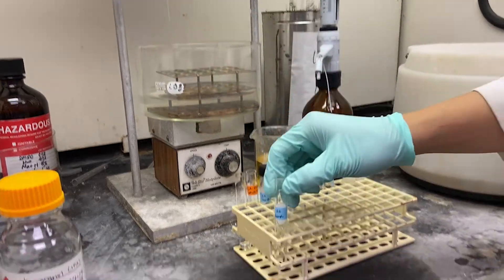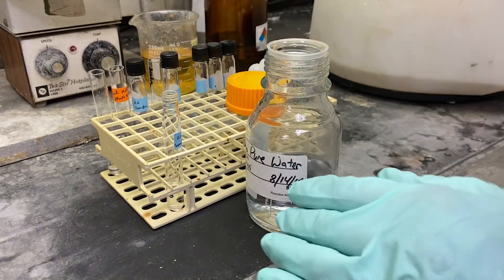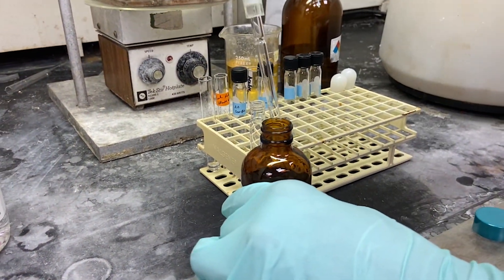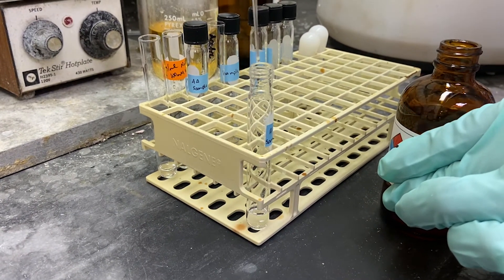After the sample is dried, 2 milliliters of water is added to the sample and the sample is vortexed. Then, 2 milliliters of DCM is added to the sample and the sample is vortexed thoroughly and centrifuged. Then, the top water layer is removed, washing the sample.